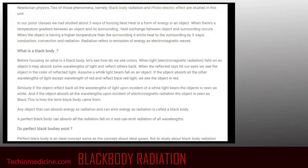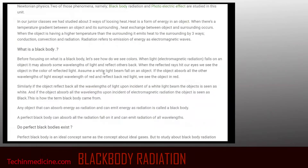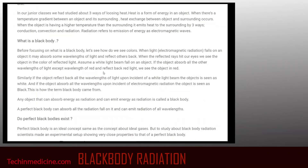Now, what is a black body? Before focusing on that, let's see how we see colors. We know that rays incident on objects from the sun are white — they do not have any particular color. But when light is incident on some objects, we see different colors reflecting from those objects. That is because a part of the rays is absorbed by the object and the other part is reflected to our eyes.